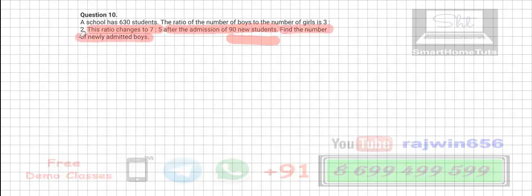Find the number of newly admitted boys. This is given to us. Now, original number of students is 630, and the ratio of boys to girls is 3 is to 2. So from this original number of boys and girls we can find out. This is the original ratio, 3 is to 2, so 3x and 2x.